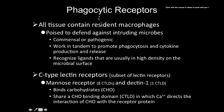Phagocytic receptors are mostly found on macrophages, and to a lesser extent neutrophils. Macrophages in the tissues are region-specific — there's a specific macrophage for the skin, a specific one for the liver — and they're usually the front line of infection, recruiting whatever else is needed. Think of them like Marines: first to go in and they arguably never leave.